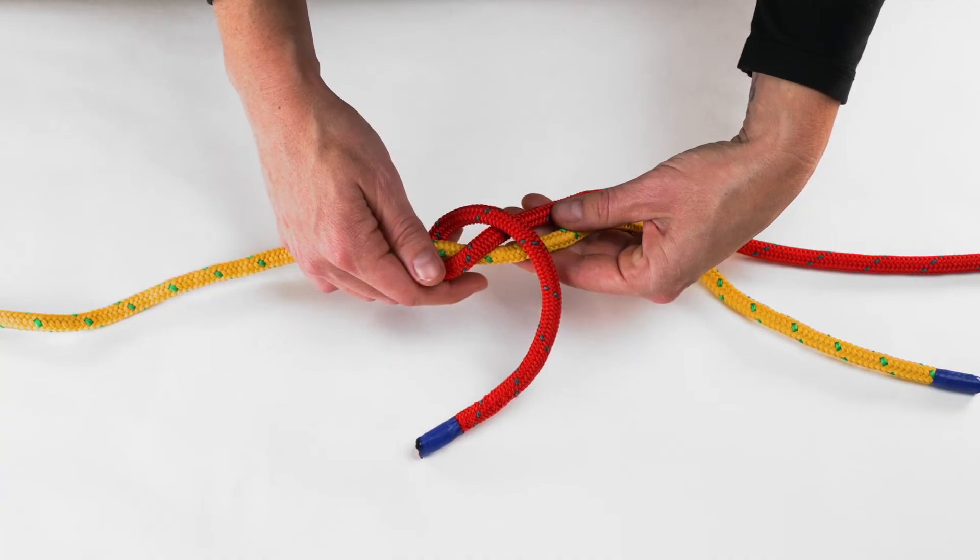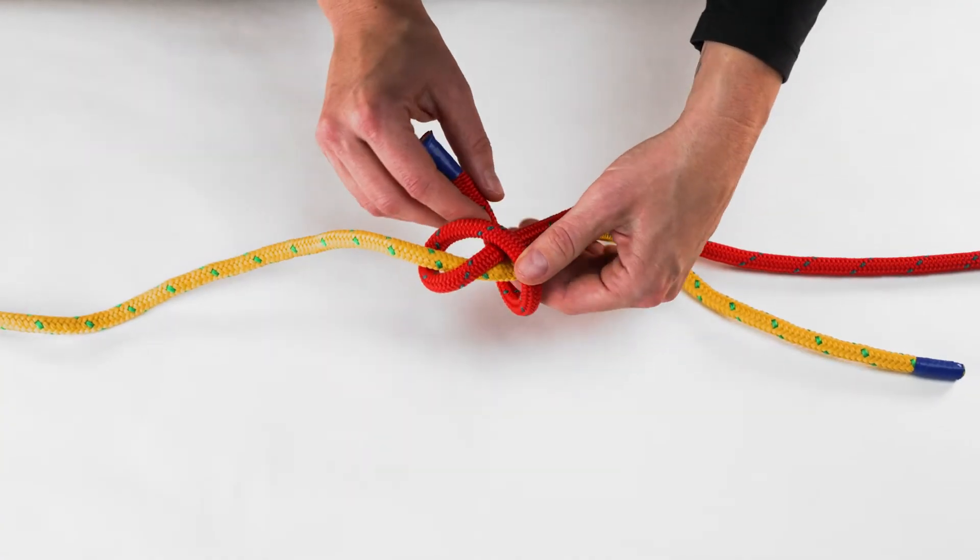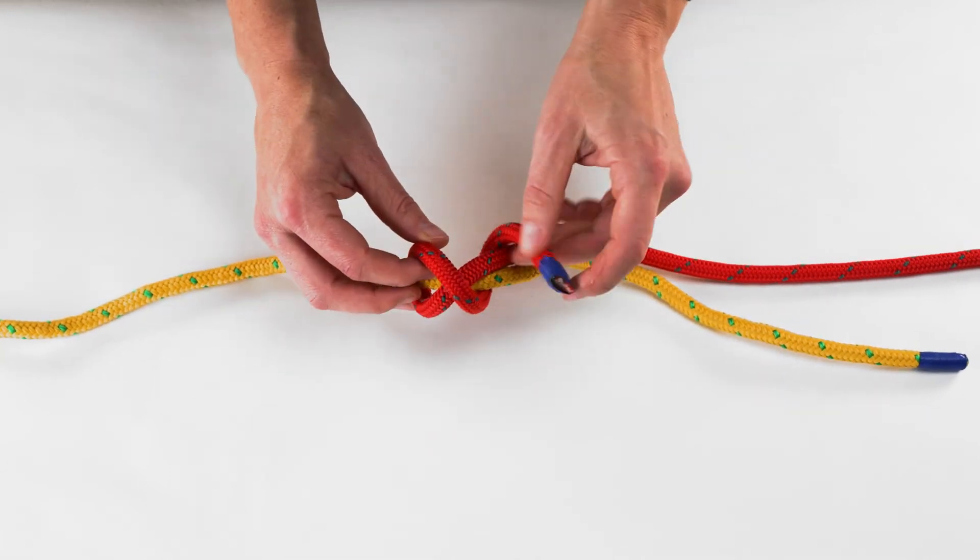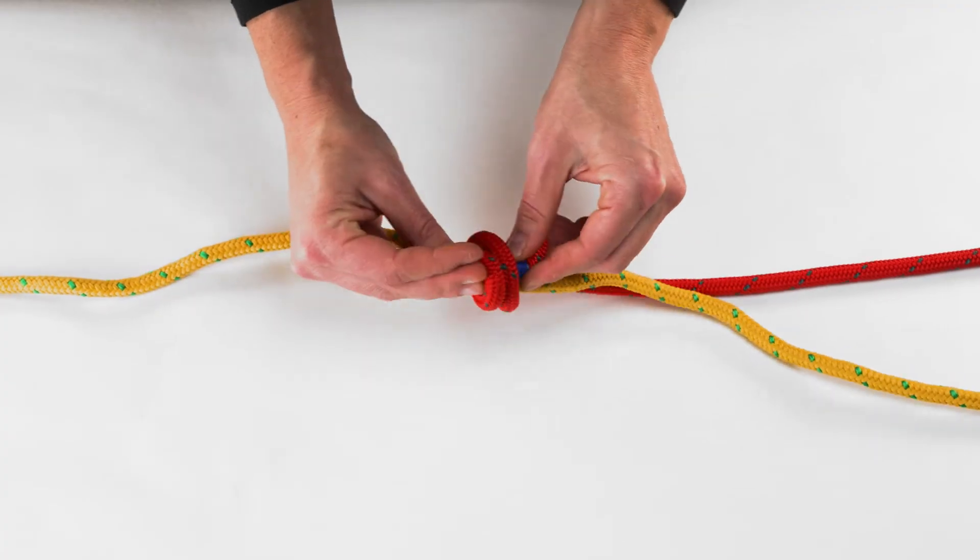An X should have been formed. Feed the working end of the rope underneath the cross to form the first double fisherman's knot.